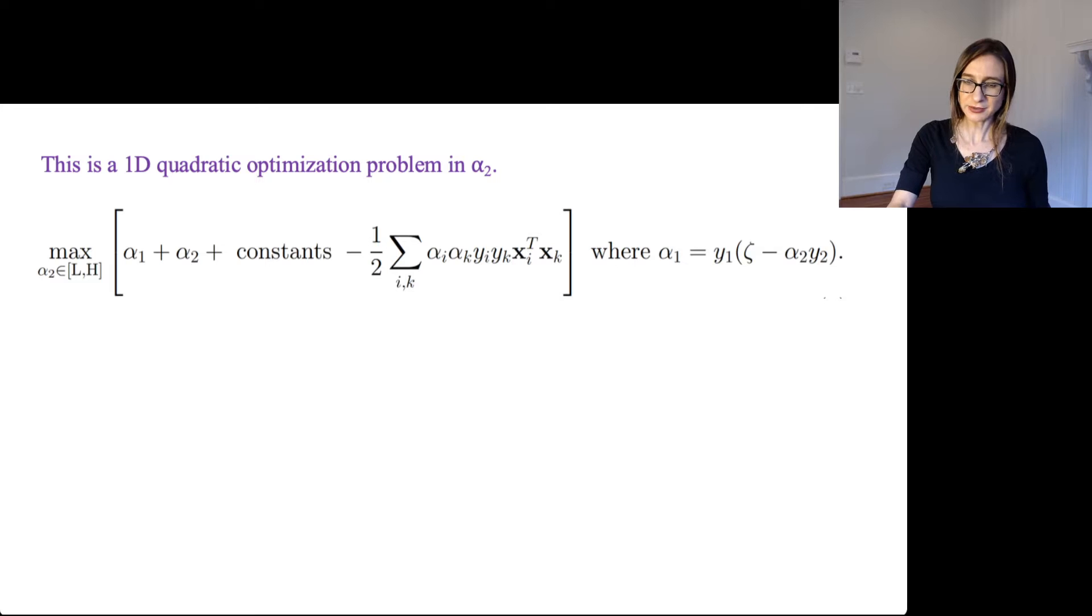Now this, of course, is a one-dimensional quadratic optimization problem in alpha 2. Now it's quadratic because you have alphas multiplying each other. There's alpha 2s multiplying other alpha 2s, and alpha 1 here is just kind of a nuisance variable because it's actually a function of alpha 2. So this whole thing, yeah, it's a one-dimensional quadratic program in alpha 2.